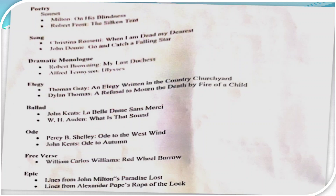Then we come to odes — odes are poems in which you address an inanimate object. For example, 'Ode to the Skylark' is a poem written to a bird, and 'Ode to the West Wind' is a poem written to the western wind. Percy Bysshe Shelley, a famous Romantic poet, has his 'Ode to the West Wind' included. John Keats's 'Ode to Autumn' — a poem written to the autumn season — is also included.